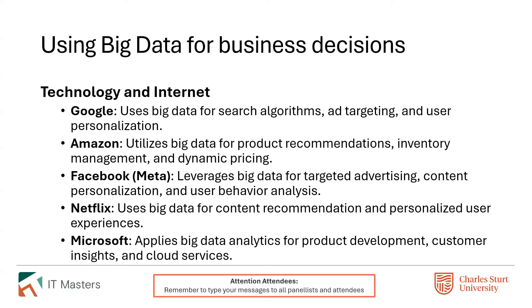Another question worth revisiting was big businesses that have used big data to make business decisions. Google uses these technologies in their search algorithms to target ads and personalize searches for individual users. Amazon uses it to target product recommendations, manage inventory, and fluctuate prices based on market need.